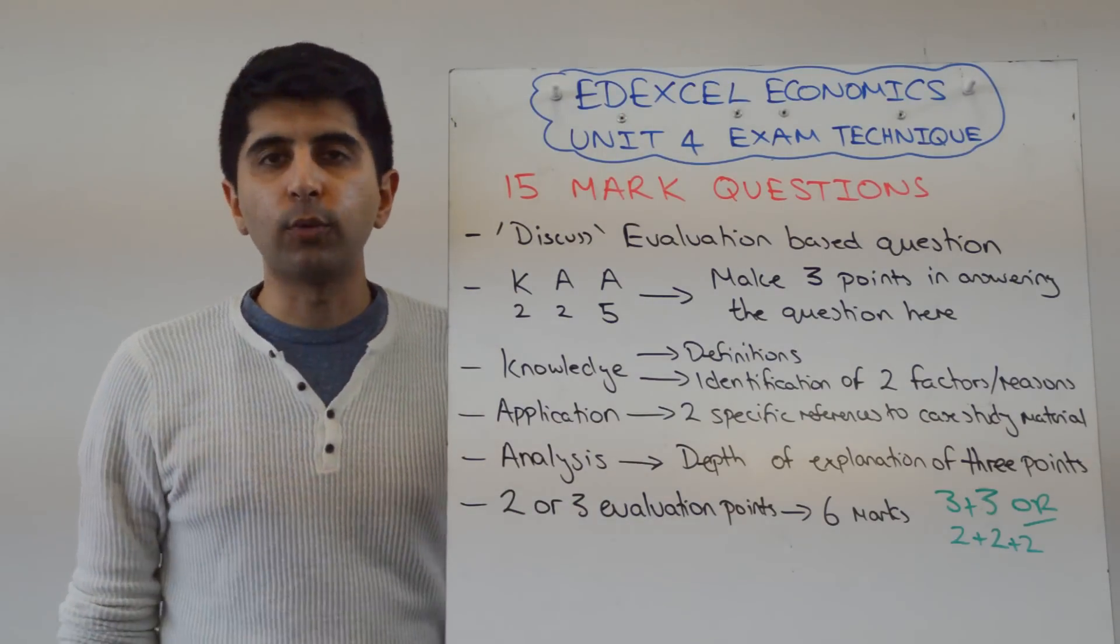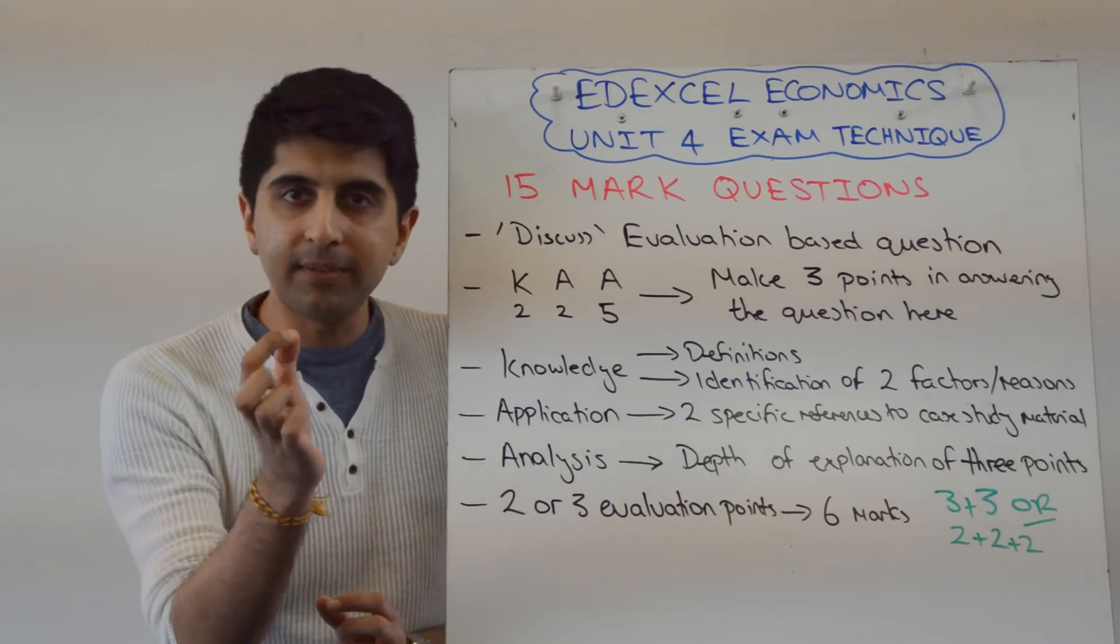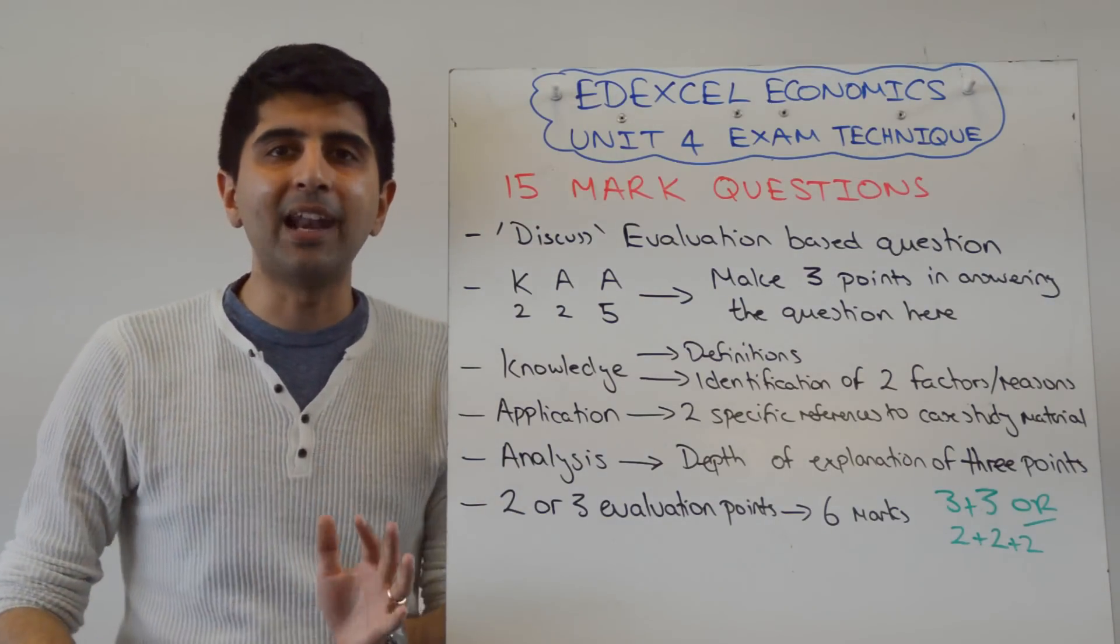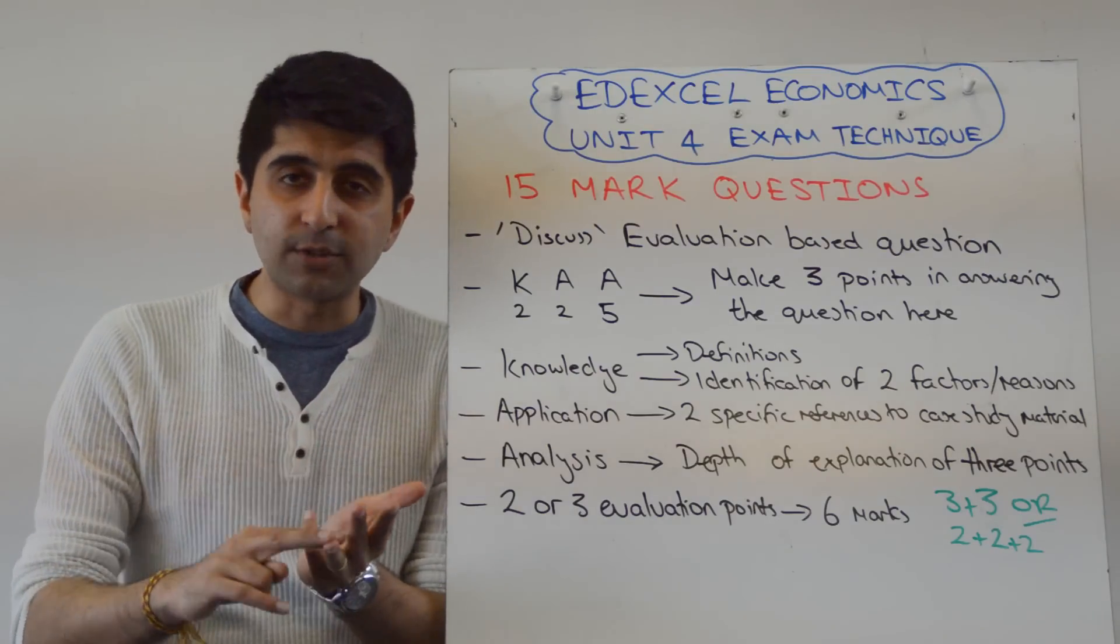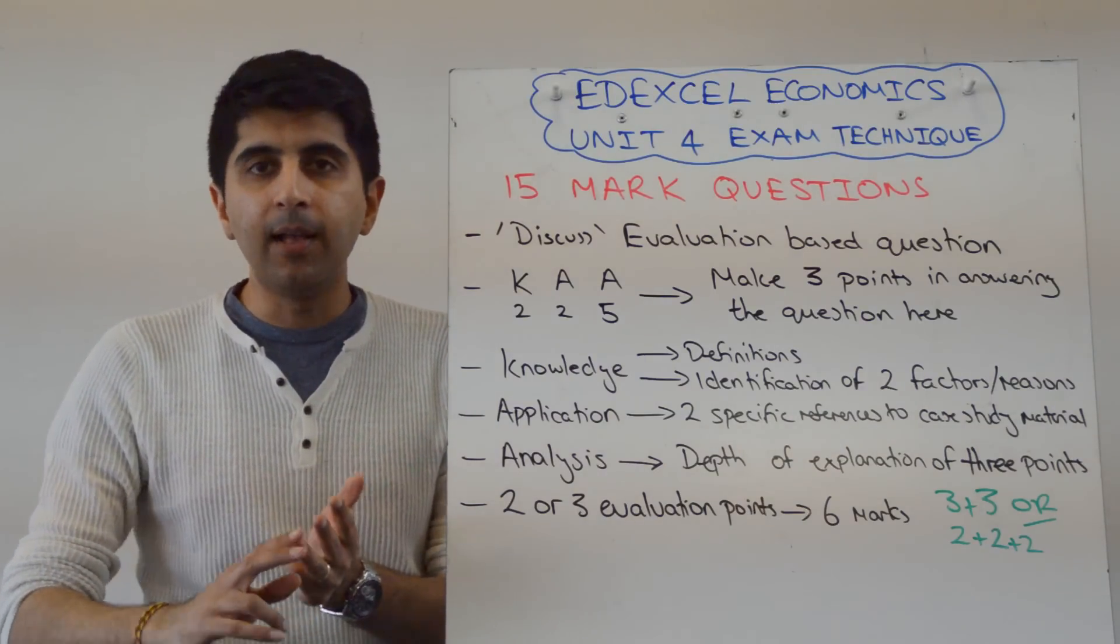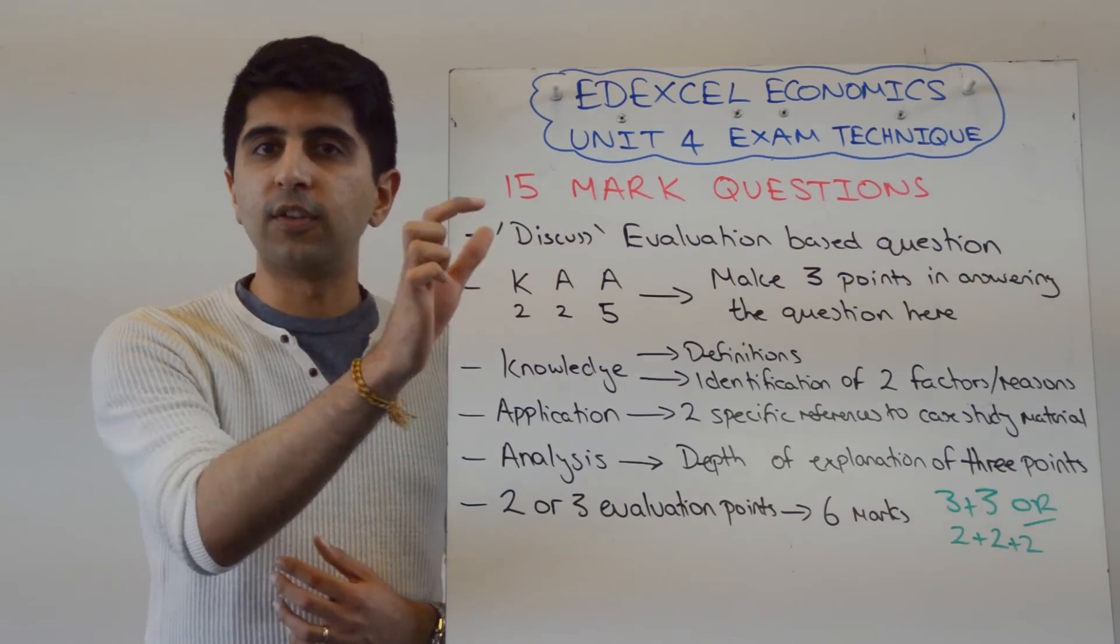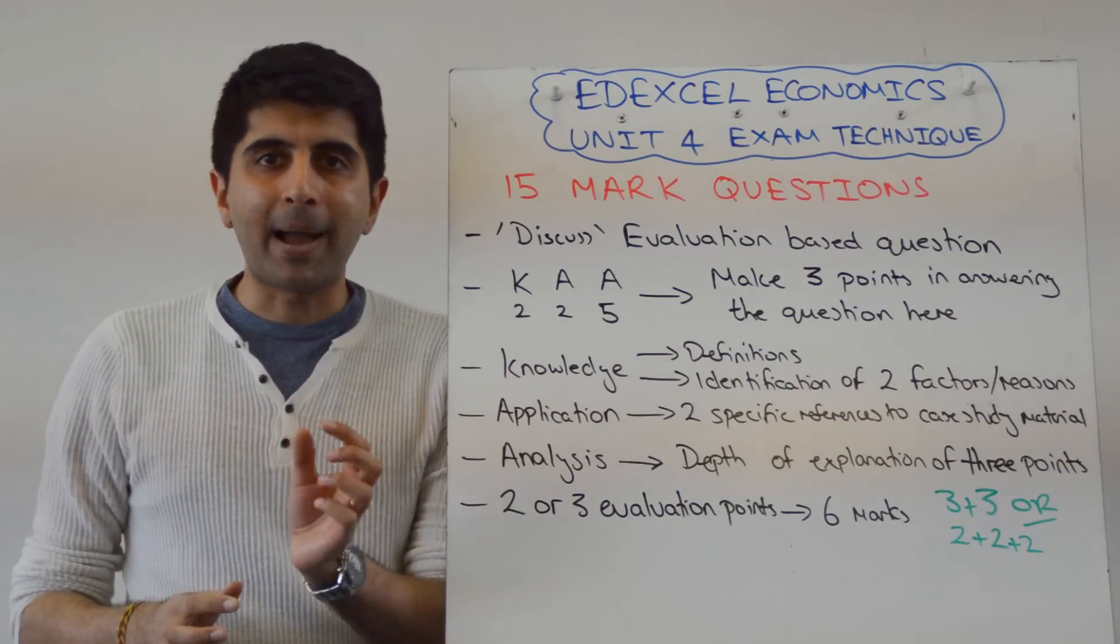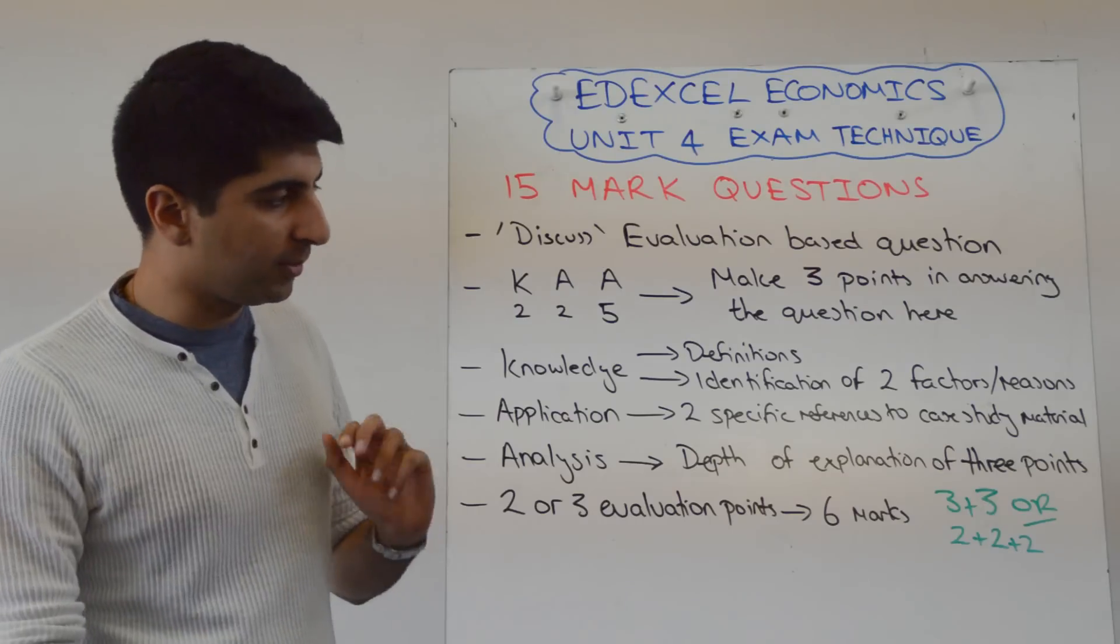Application will get you 2 marks. So what you're looking to do here is explicitly quoting 2 things from the case study material. Again, I would do 3, one for each paragraph, one for each point you're making. Make a specific reference to the case study material. Explicitly quote something. And that will bank your 2 marks for application. That should be very easy.